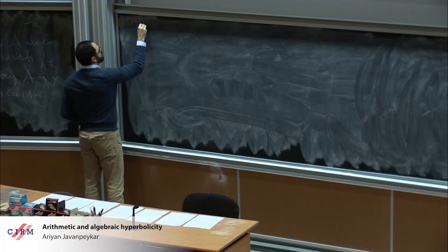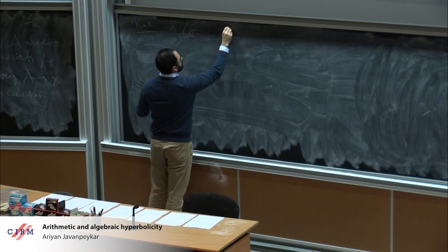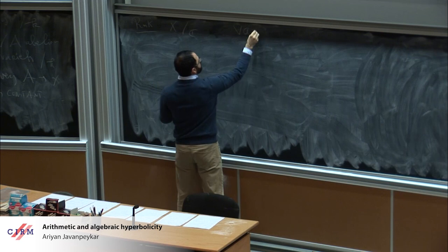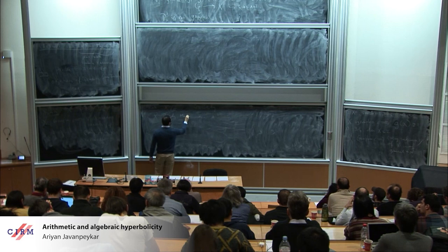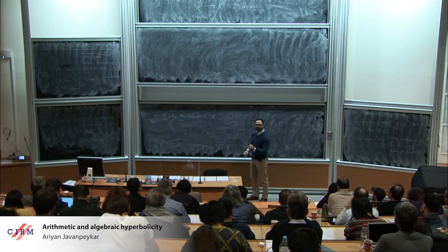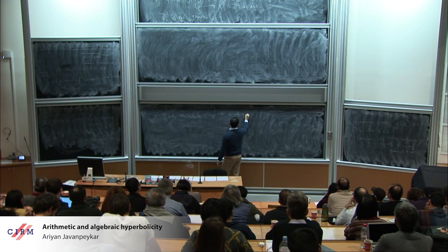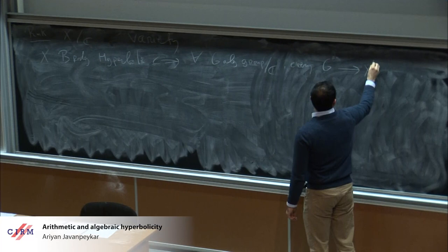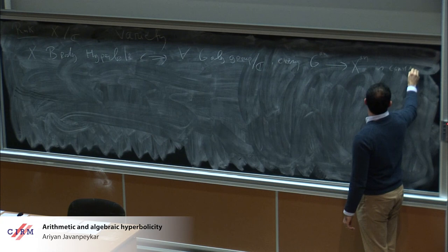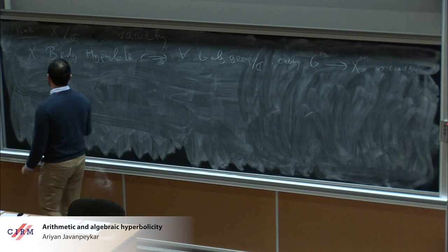Another class of examples of groupless varieties are provided by Brody hyperbolic varieties. If I take a variety over the complex numbers, then it is Brody hyperbolic if and only if it has no entire curves. This is equivalent to being analytically groupless: for every algebraic group over C, any holomorphic map in the category of complex analytic spaces is constant. Once you prove this, it's clear that Brody hyperbolic varieties are groupless.